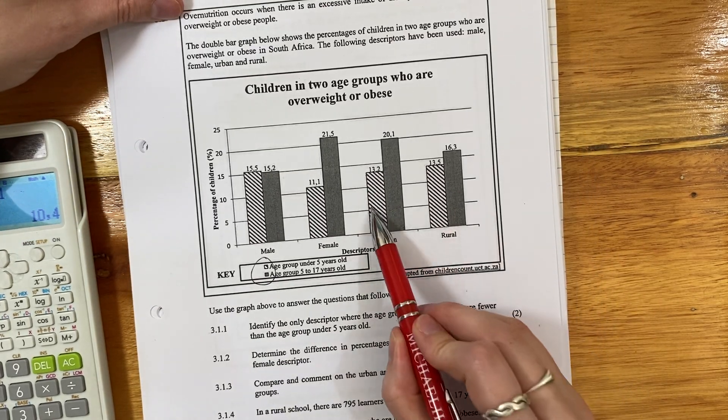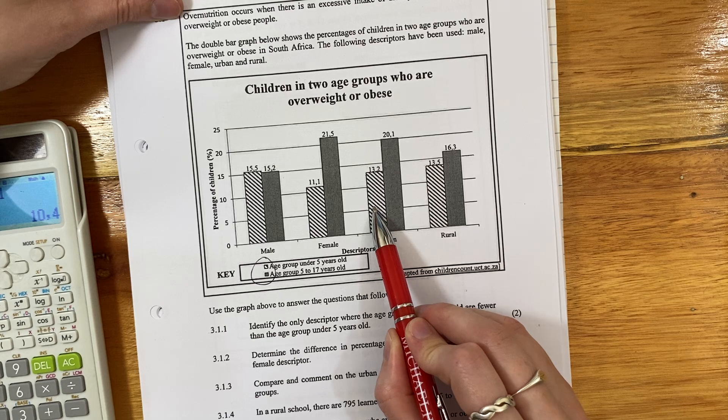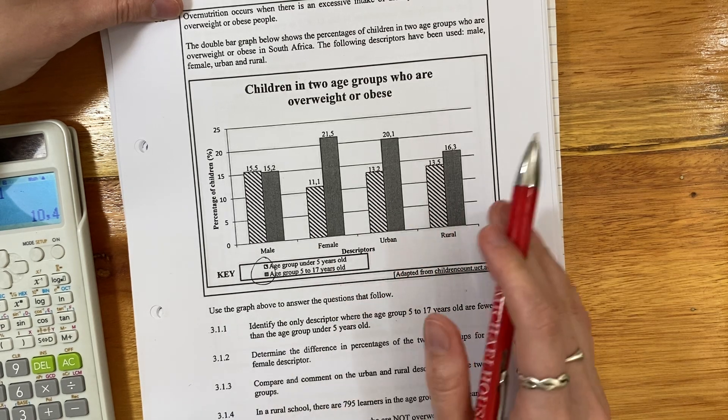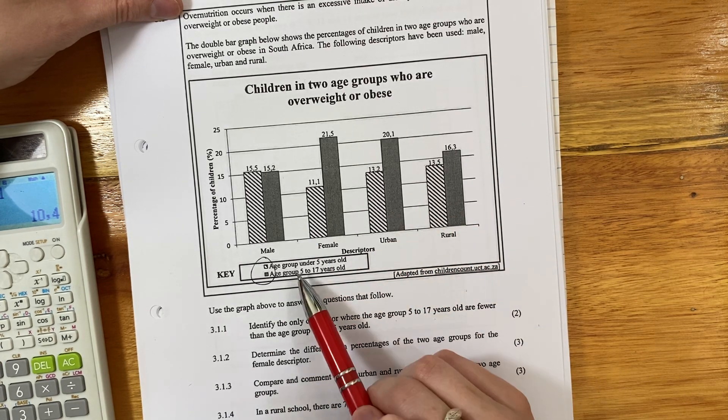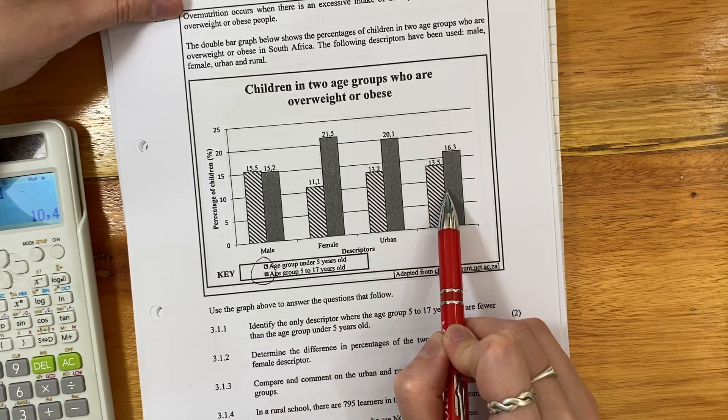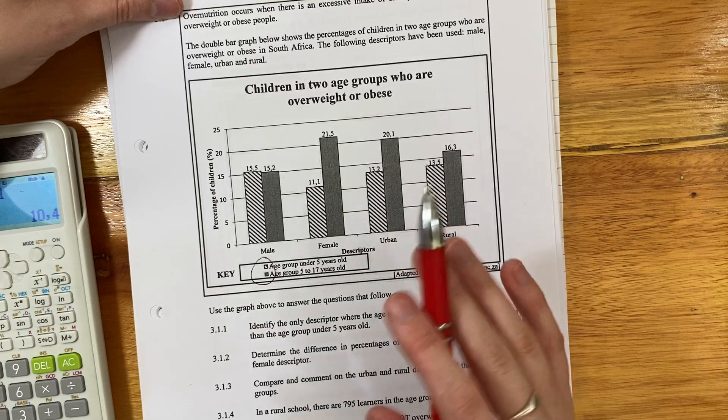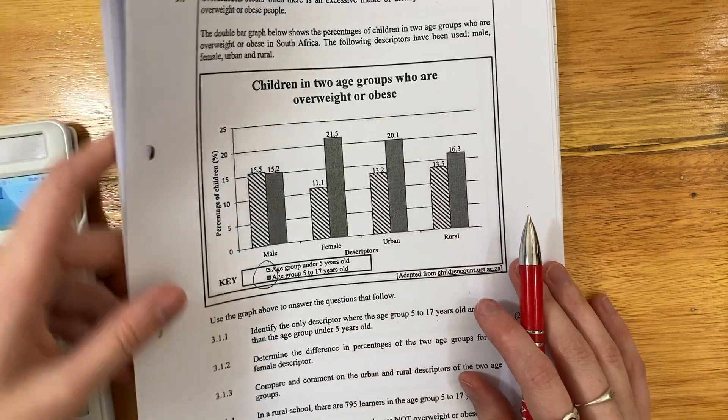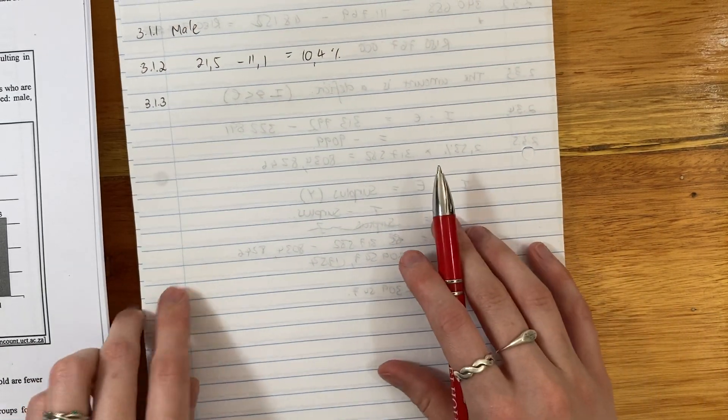Now if we look at these two, we can see that for under the age of 5, they're kind of the same, right? But over the age of 5 to 17, urban is a lot higher than rural. And that's what you need to say. That's all you need to say. You don't need to be writing essays and essays.